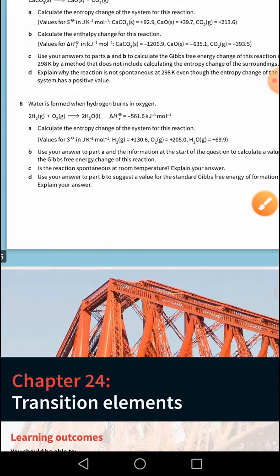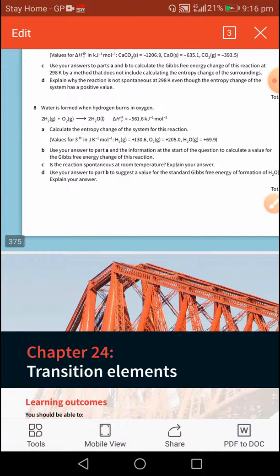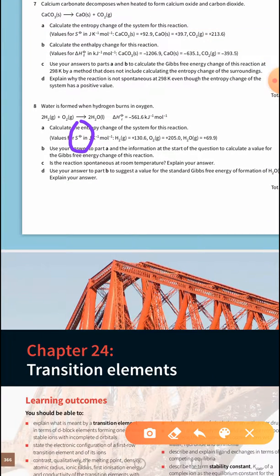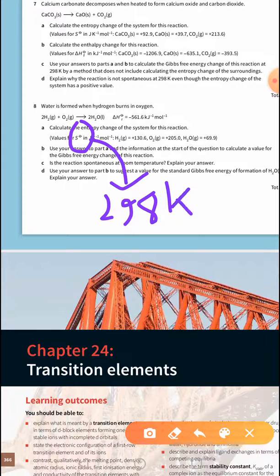Part B says: use your answer to part A and the information at the start of the question to calculate a value for the Gibbs free energy for the reaction. Notice the symbol given is the standard entropy, which means the entropies are calculated under standard conditions. Standard conditions means a temperature of 298 Kelvin.